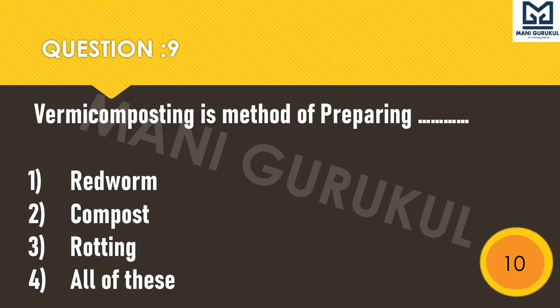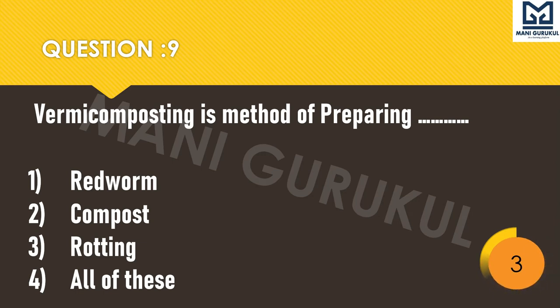Question 9: Vermicomposting is a method of preparing dash. First: red worm. Second: compost. Third: rotting. Fourth: all of these. Vermicomposting is a method of preparing — what is it? Time's up.